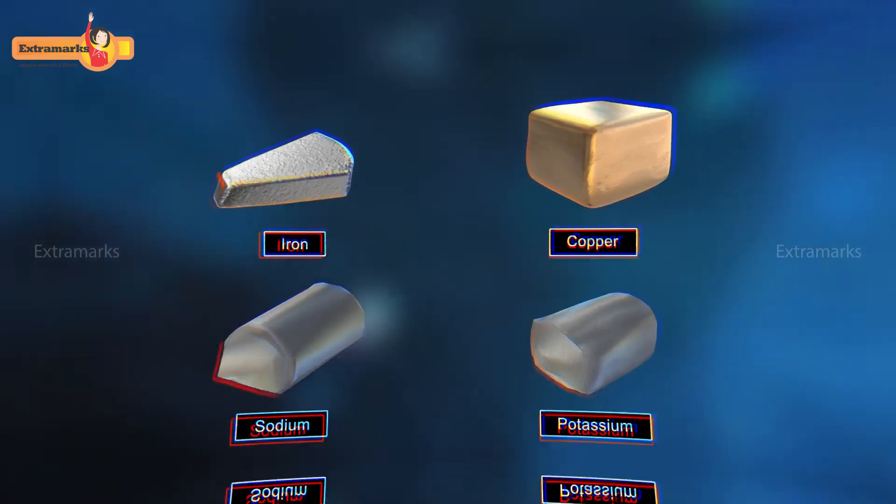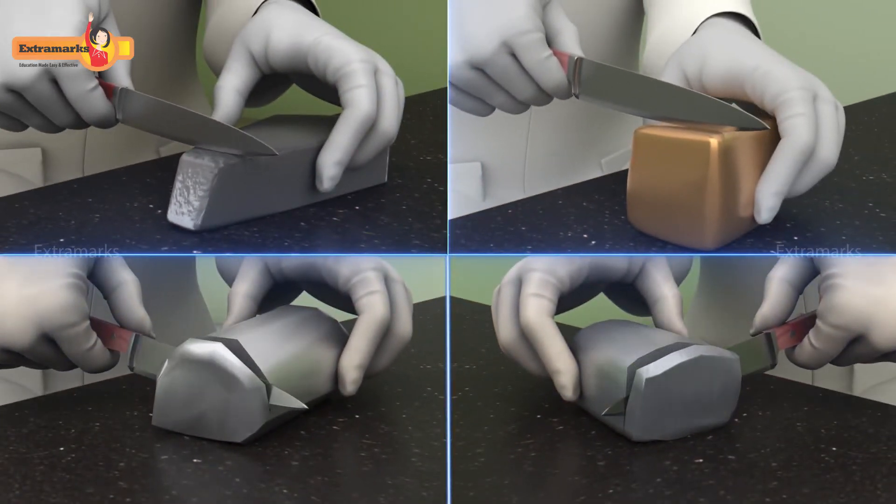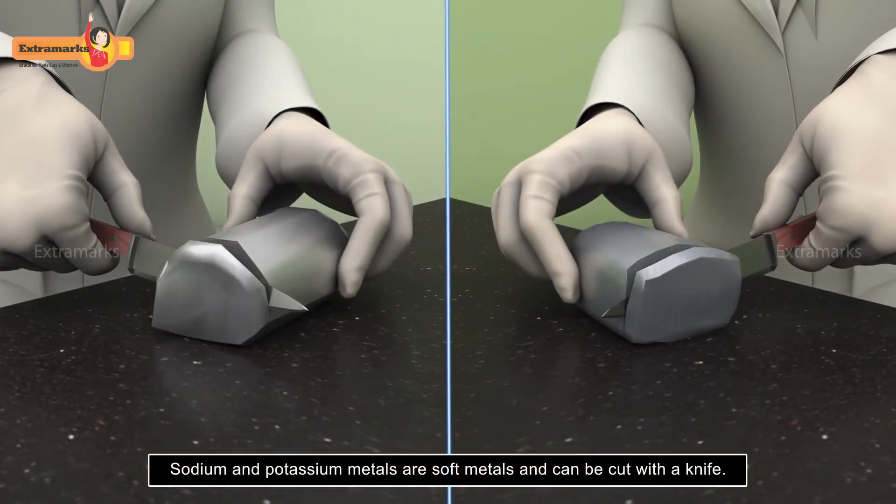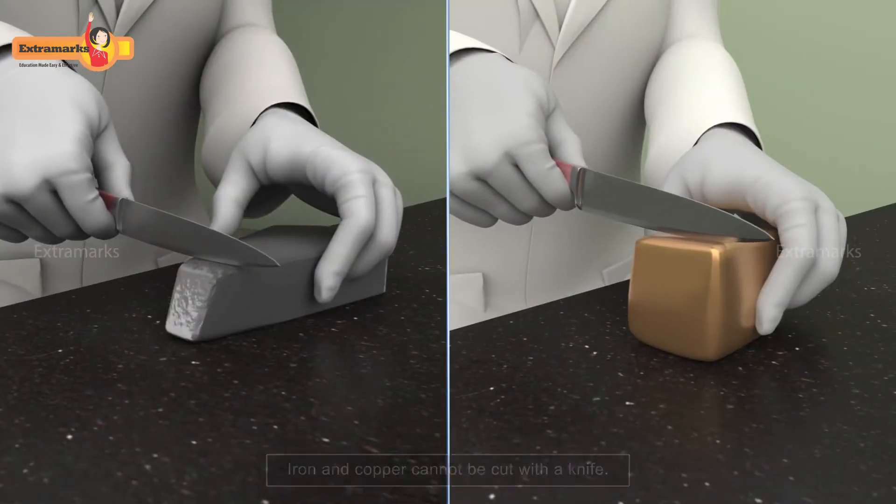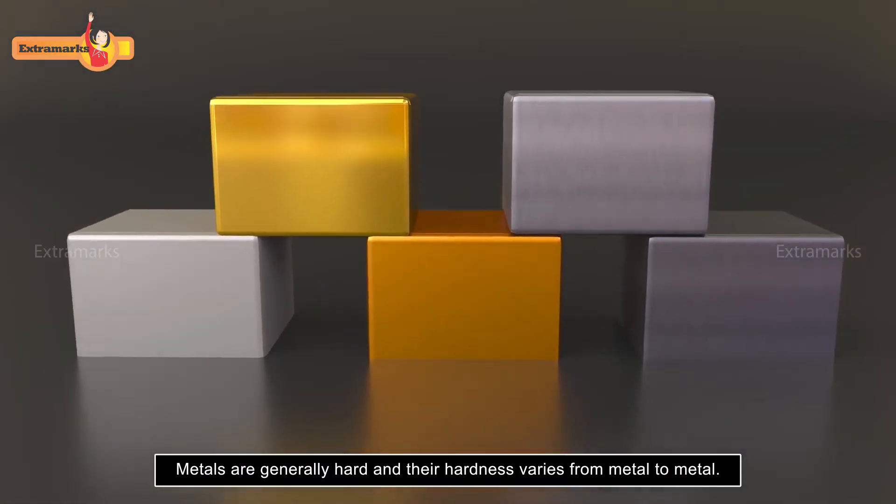Now try to cut these metals with a sharp knife and note your observations. You will notice that sodium and potassium are soft metals and can be cut with a knife, while iron and copper cannot be cut. So metals are generally hard, and their hardness varies from metal to metal.